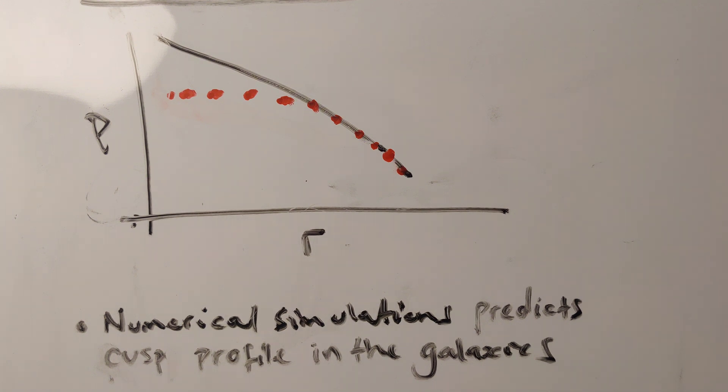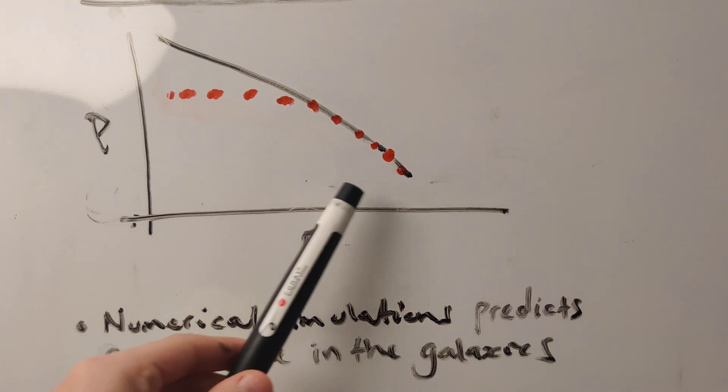However, the observation disagrees with this. From observation, we see that the dark matter density distribution of galaxies, big galaxies and dwarf galaxies, should follow this red dot.